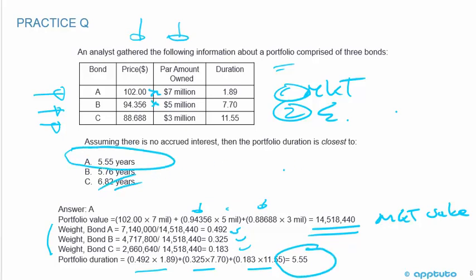Quite easy overall, but in this case they gave us the price and par amount owned, so we had to calculate the market values first — just a little sub-calculation.